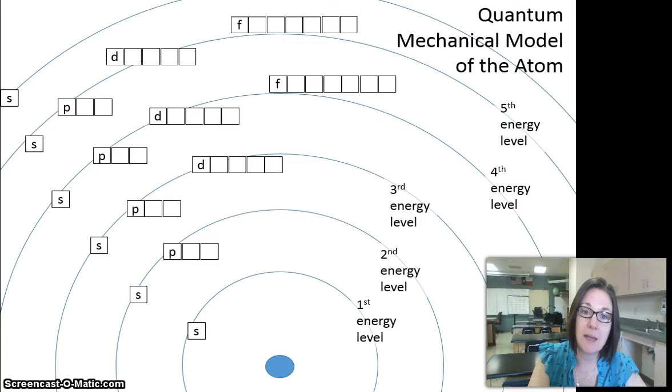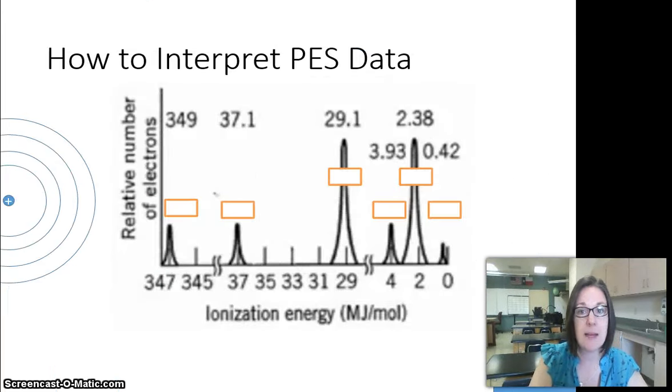So when we look at PES data, we're going to be looking at not just what energy level they're on, but what type of sublevel are the electrons in. This is what PES data looks like. It's got an x-axis and a y-axis.